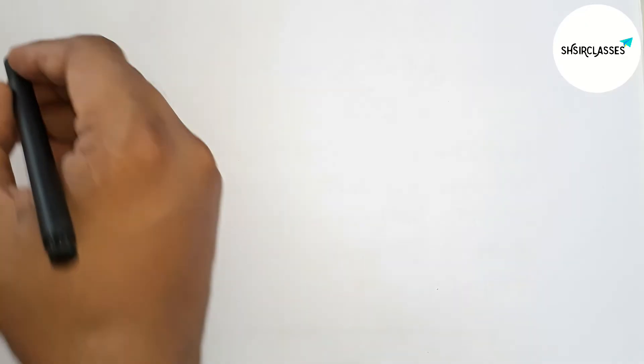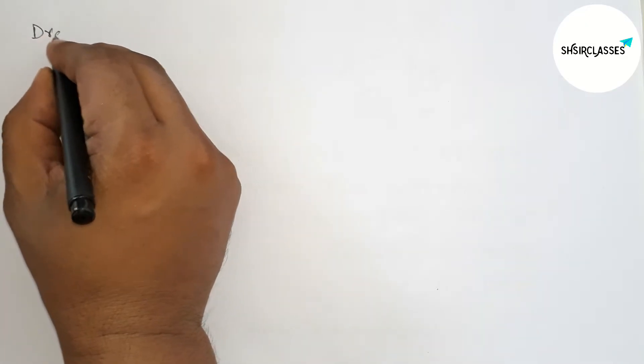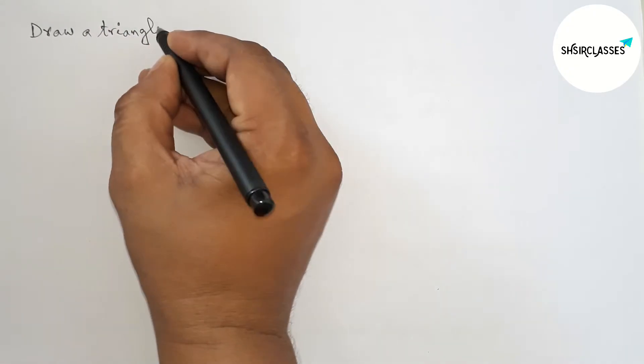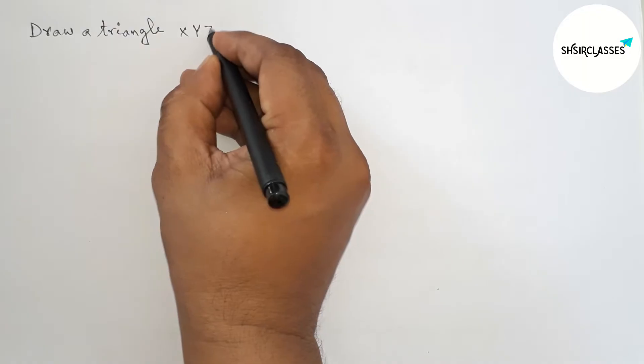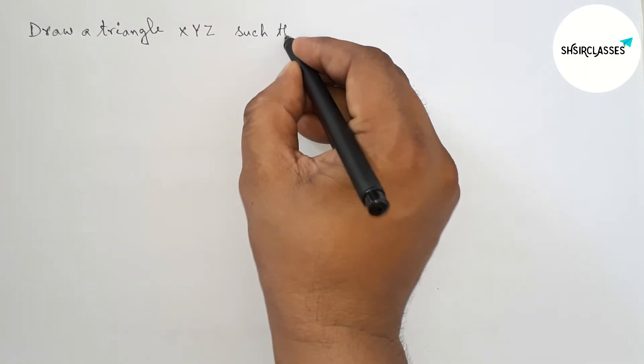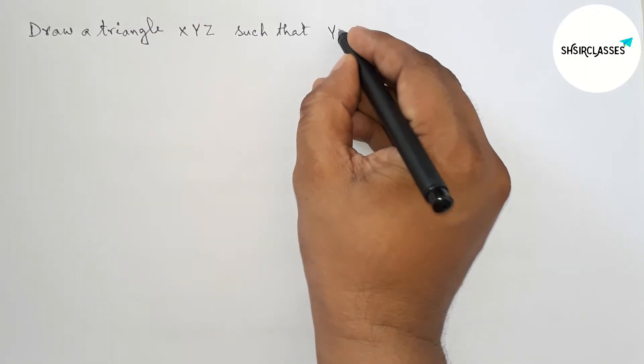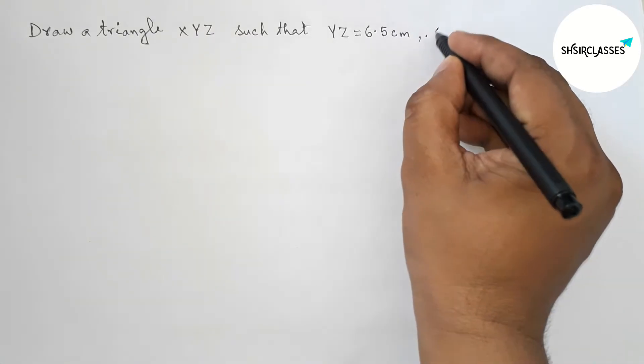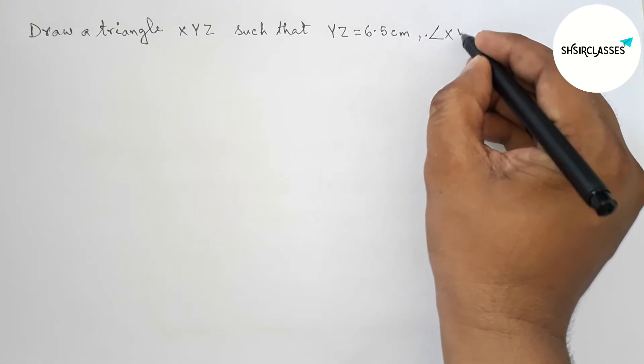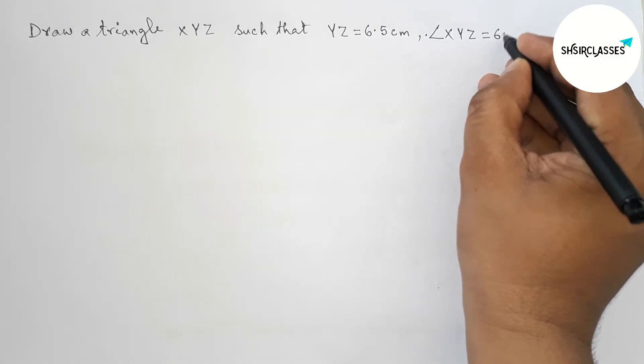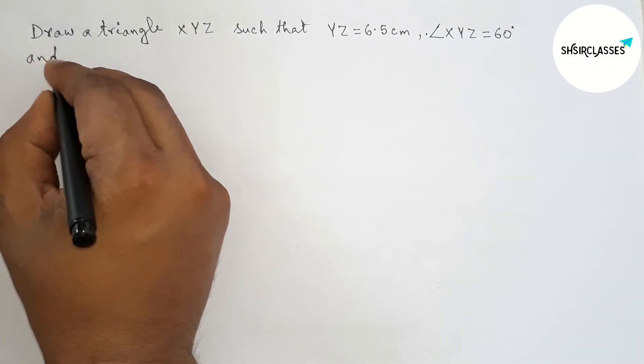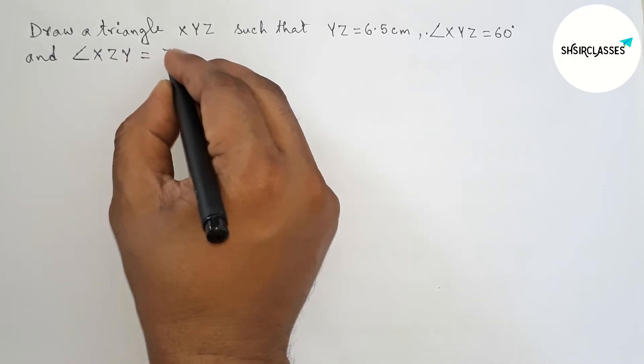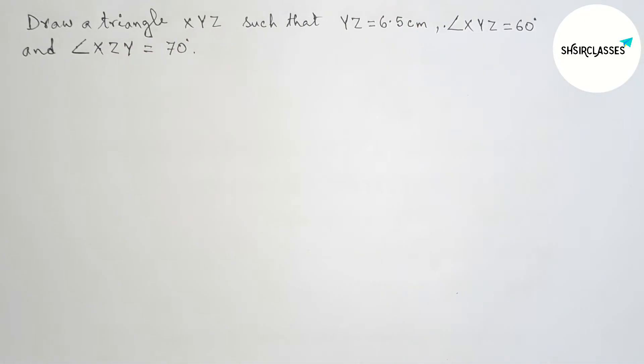Hi everyone, welcome to Essay Share Classes. Today in this video we have to draw a triangle XYZ such that given one side YZ equal 6.5 centimeter and given two angles: angle XYZ 60 degrees and angle XZY 70 degrees. So please watch the video till the end, so let's start the video.